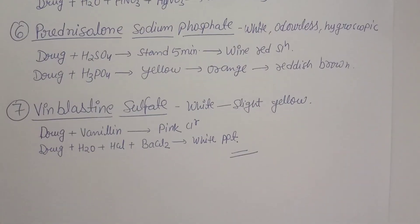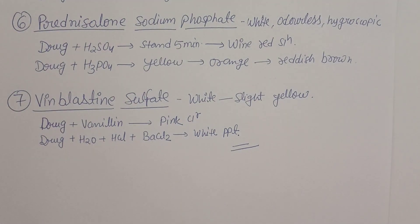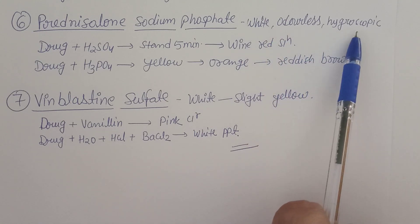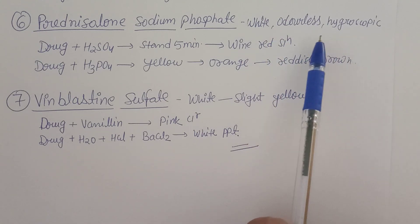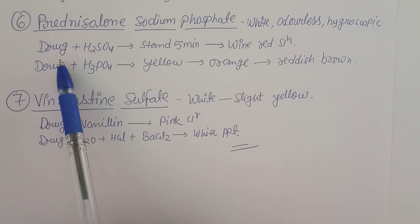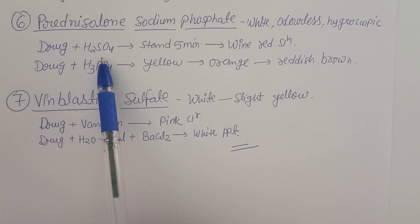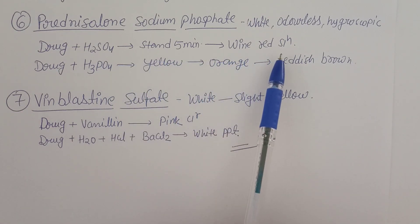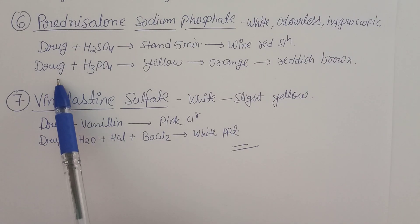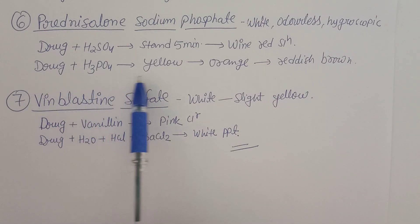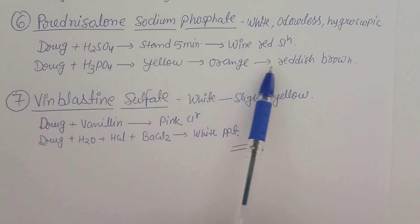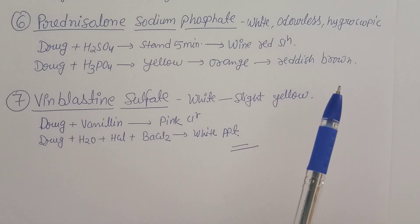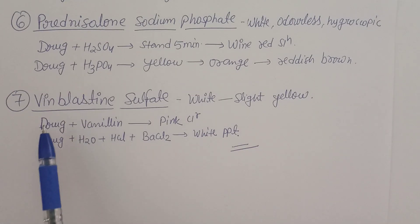The sixth drug is Prednisolone Sodium Phosphate — also white, odorless, and hygroscopic. Test 1: Take the drug with sulfuric acid, stand for five minutes — a wine-red color forms, confirming Prednisolone. Test 2: Take the drug with phosphoric acid — the yellow color turns to orange and ultimately to reddish-brown, confirming Prednisolone Sodium Phosphate in the given sample.